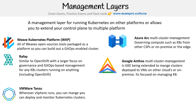Then we have Google Anthos, which is also multi-cluster management but specific to Kubernetes. As far as I understand, it's GKE — Google Kubernetes Engine — but extending cluster management to other cloud service providers like AWS (I don't think they have Azure) or on premise. It basically takes over VMs and installs whatever it needs to allow you to manage everything from Anthos. From a Kubernetes perspective, I think it has an edge over Azure Arc, but Azure Arc might be better for security or compliance governance.